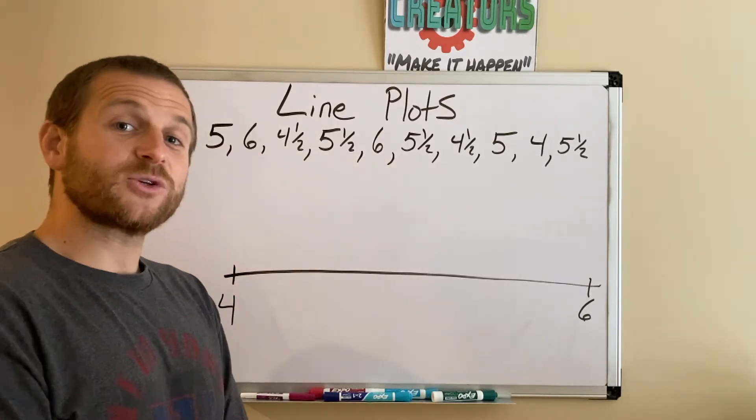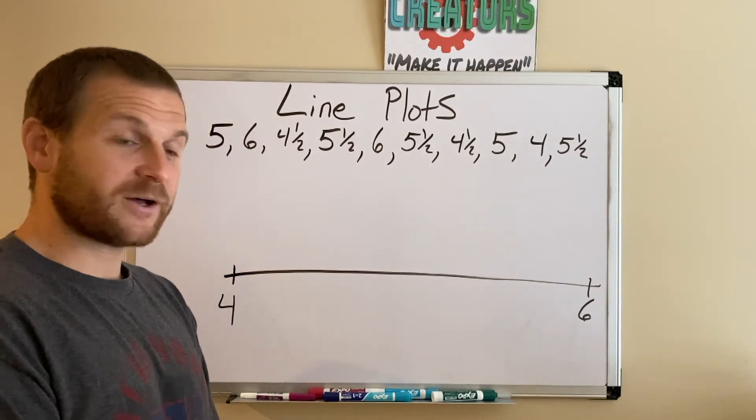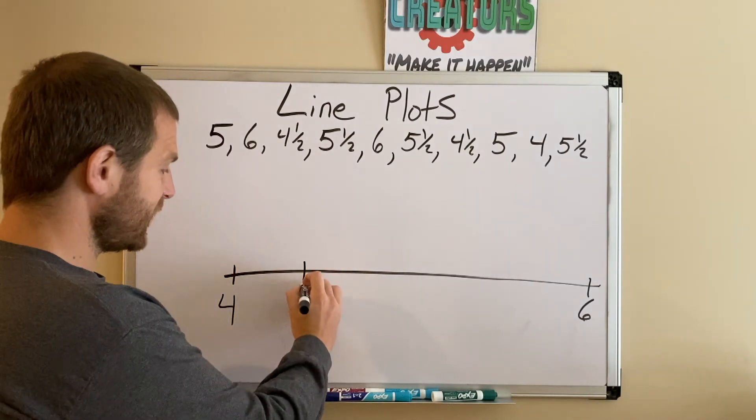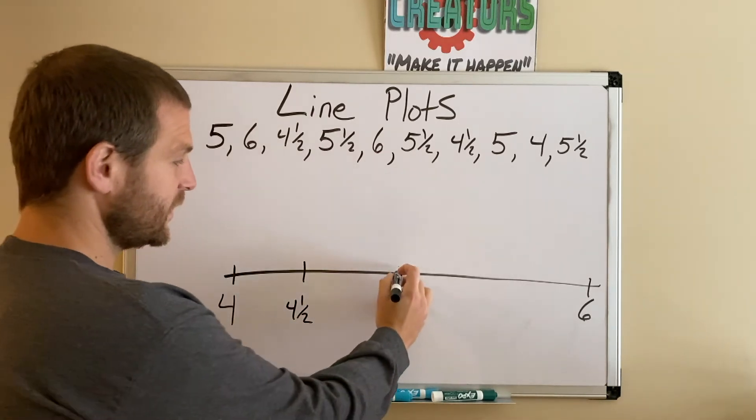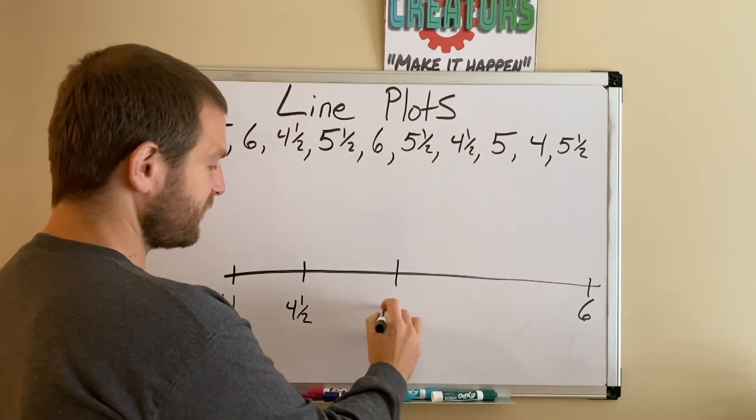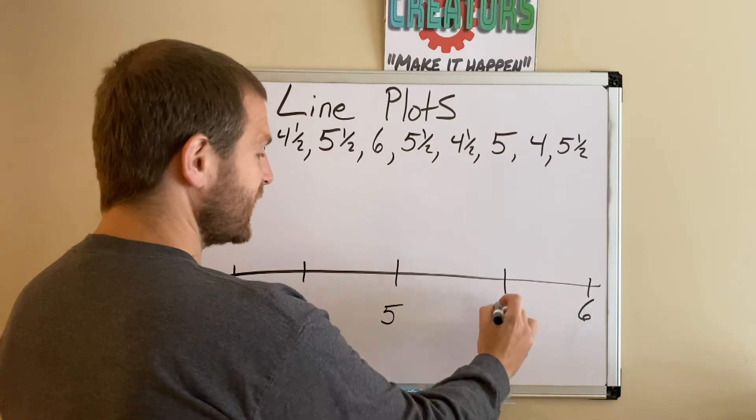I need to make sure I count for that as well. So I'm going to do 4, then I'm going to have a 4½, and then I can split it down the middle with a 5, and then a 5½, and then a 6.